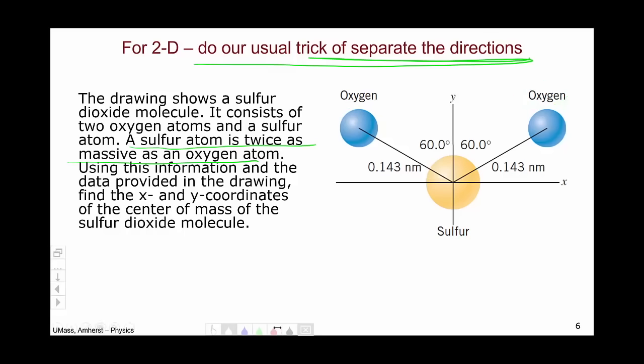Now we don't have any masses given in the problem, but that's okay. We'll apply our usual trick and say the oxygen has mass m, we'll assign a variable to it, and our sulfur atom will therefore have mass 2m.